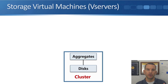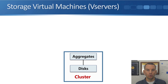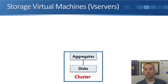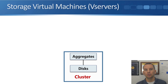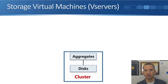SVMs are used for secure multi-tenancy. Say you've got department A and department B and they both want their own separate storage system. Years ago you would have had to buy two separate physical storage systems, each requiring their own supporting infrastructure and switches — obviously expensive. With ONTAP, you can virtualize one physical system into multiple separate logical systems. Each logical system appears to be a separate storage system to the client and they're kept completely secure from each other. That is done in ONTAP using SVMs.